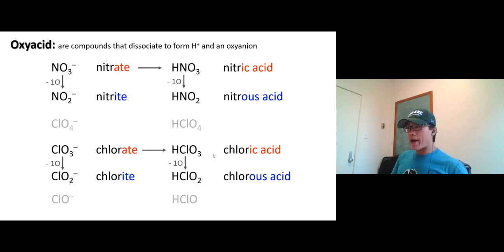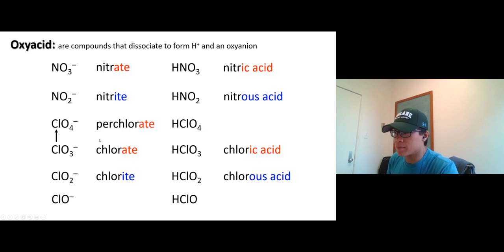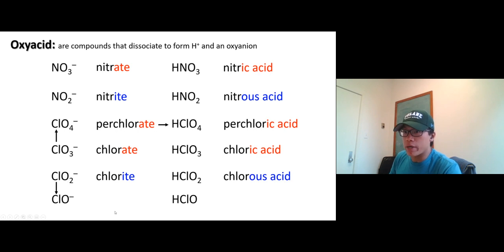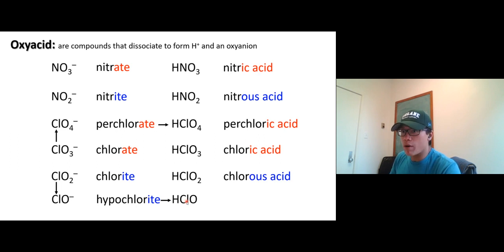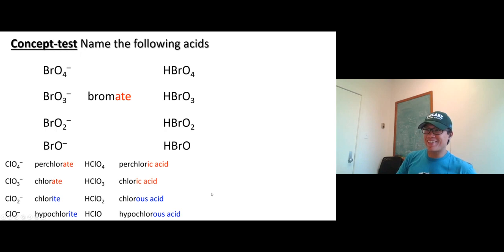Going above chlorate by adding one more oxygen gives perchlorate, and its acid form is perchloric acid — everything stays the same, just add 'per.' Coming down below chlorate by reducing oxygen gives hypochlorite, and its acid form is hypochlorous acid. Try these on your own first.